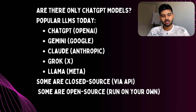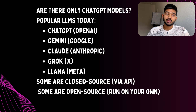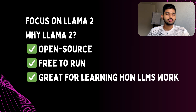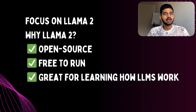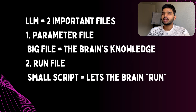Currently there are many models available in the market, like ChatGPT, DeepSeek, Grok, Gemini, Claude, LLaMA, and many more. Some are closed source like GPT and Claude, and some are open source like LLaMA, which we can run on our own computer totally for free. To keep things simple, let's consider LLaMA 2 from Meta, because it's open source and we can look inside and understand how it works under the hood. At its core, an LLM is made up of just two files: a parameter file and a run file.